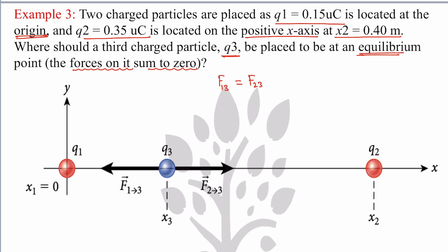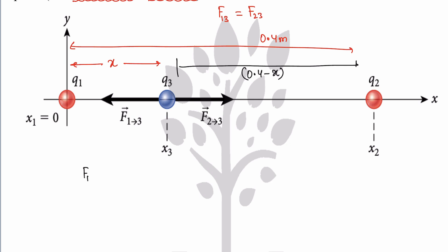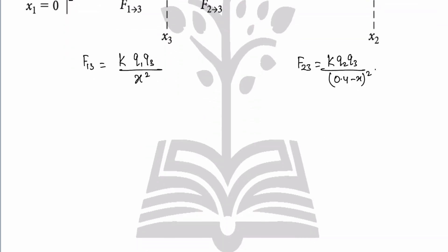Simple thing — no distance is given for x, so take it as x. The full distance 0.4 meters is given. So the remaining distance is 0.4 − x. Now F_13: k·q1·q3 / x². And F_23: k·q2·q3 / (0.4 − x)². Set them equal: k·q1·q3 / x² = k·q2·q3 / (0.4 − x)².